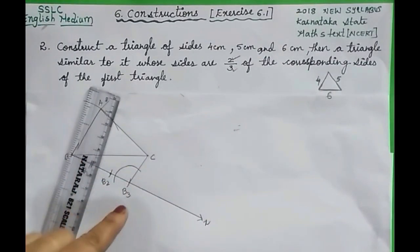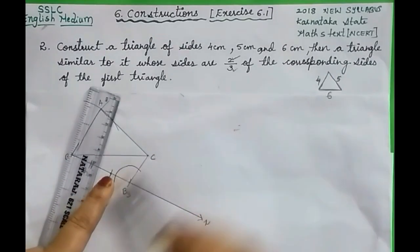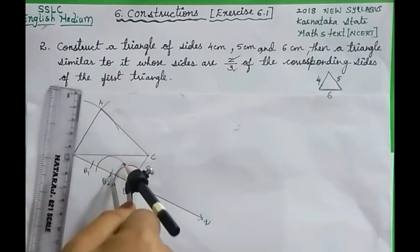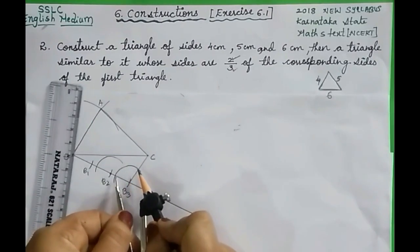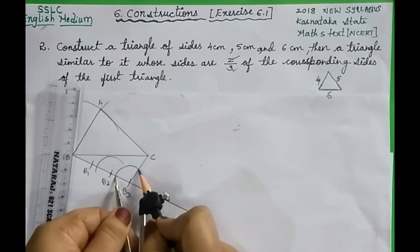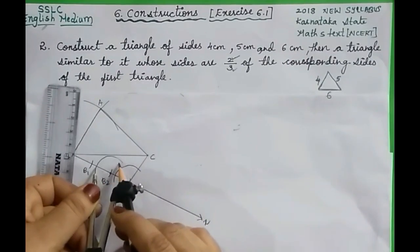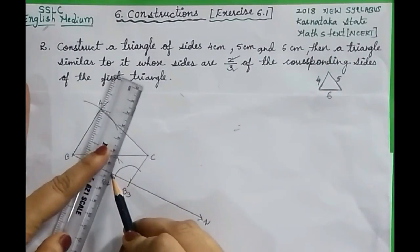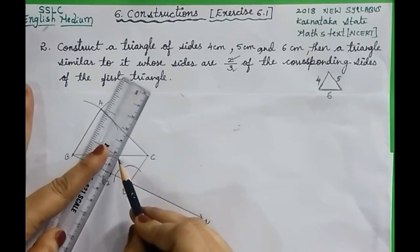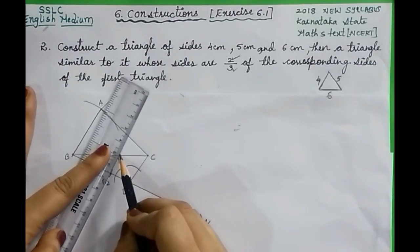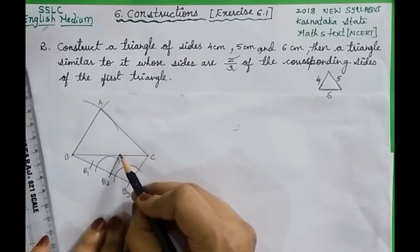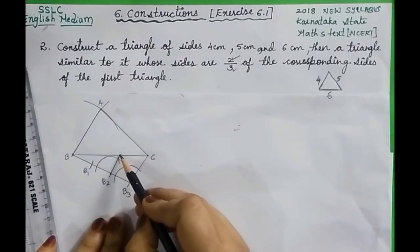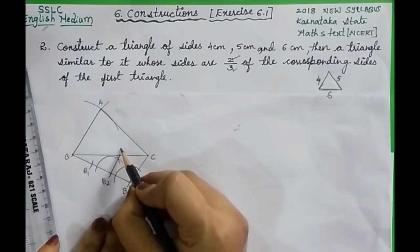Draw an arc with B3 as center. Then with the same radius, draw another arc with B2 as center. Now measure the angle between the two lines carefully, then cut this arc from B2. Draw a line from B2 passing through this intersecting point. The intersection point on the extension of BC — let us name it as C'. This is C and this is C'.